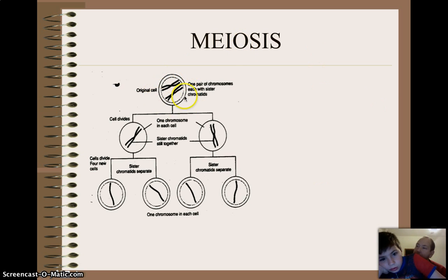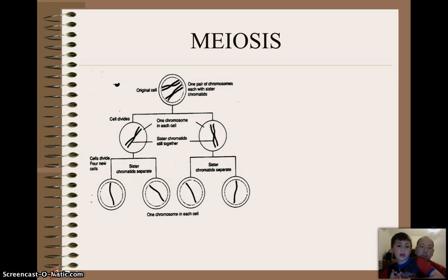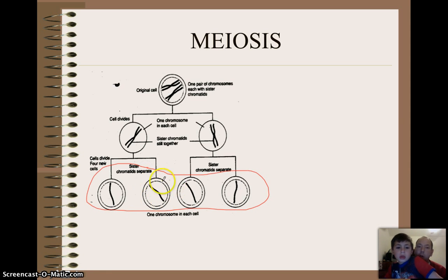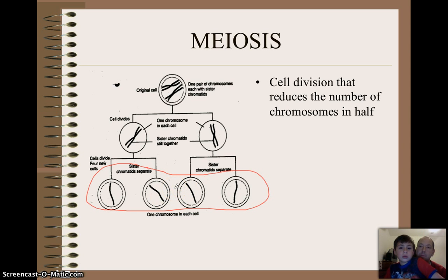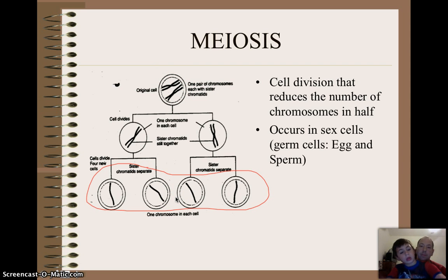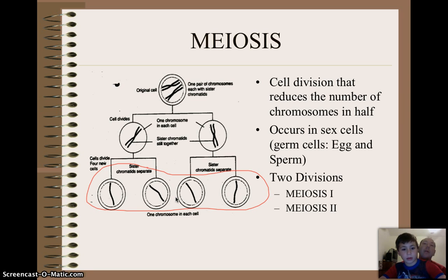If you notice here, we're going to start with an original cell. And then that cell divides into two. And then those cells divide again, and we end up with four cells. Each of these are genetically different from the other ones. And so meiosis is basically a cell division that cuts the number of chromosomes in half from this original cell to a haploid state. And there are two divisions: one's called meiosis I, the other one is called meiosis II.